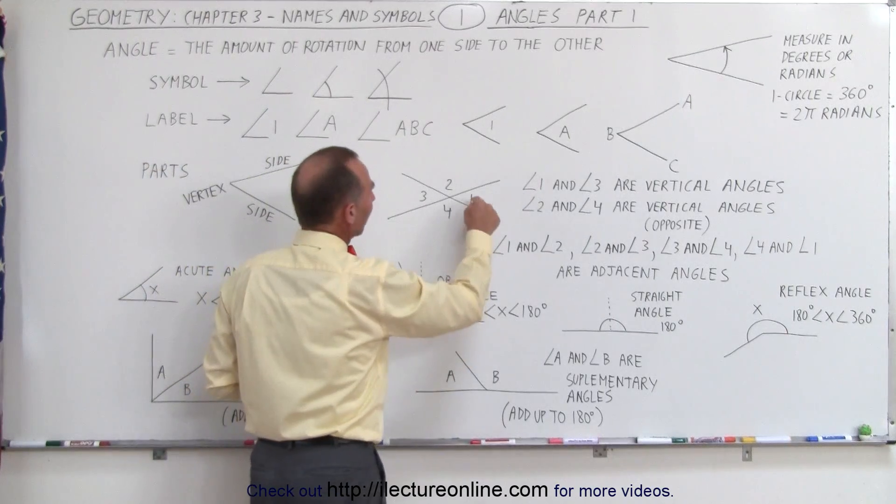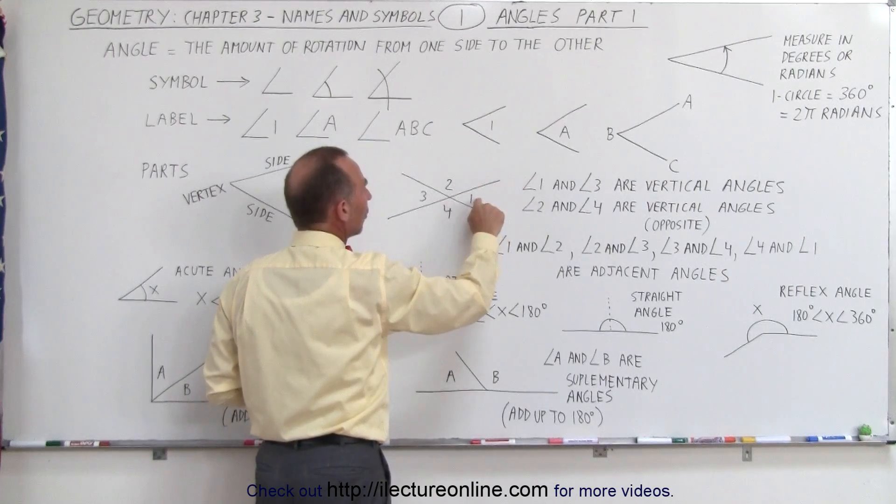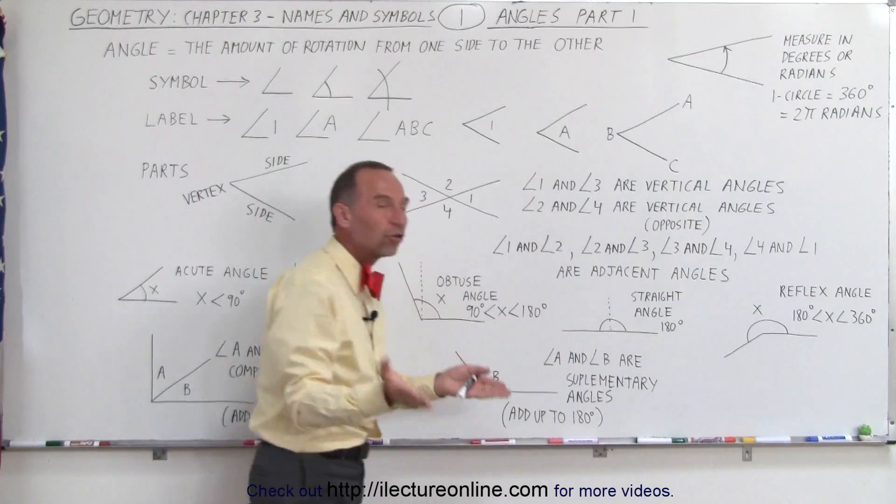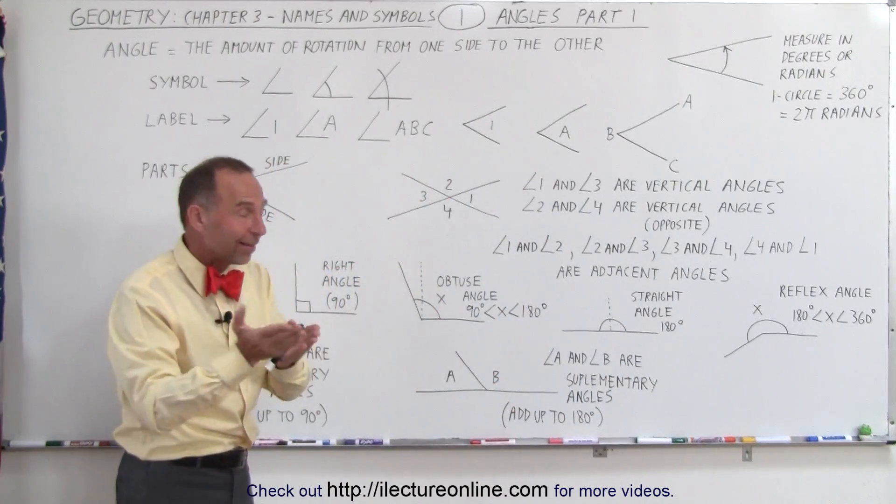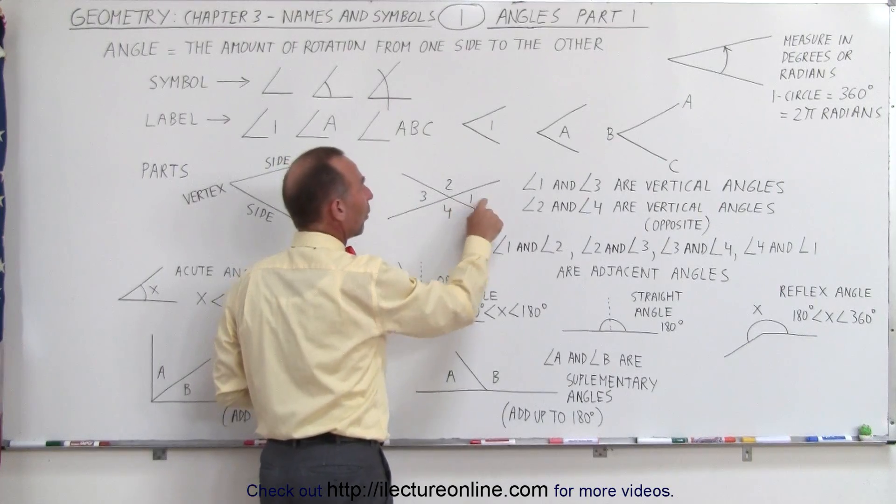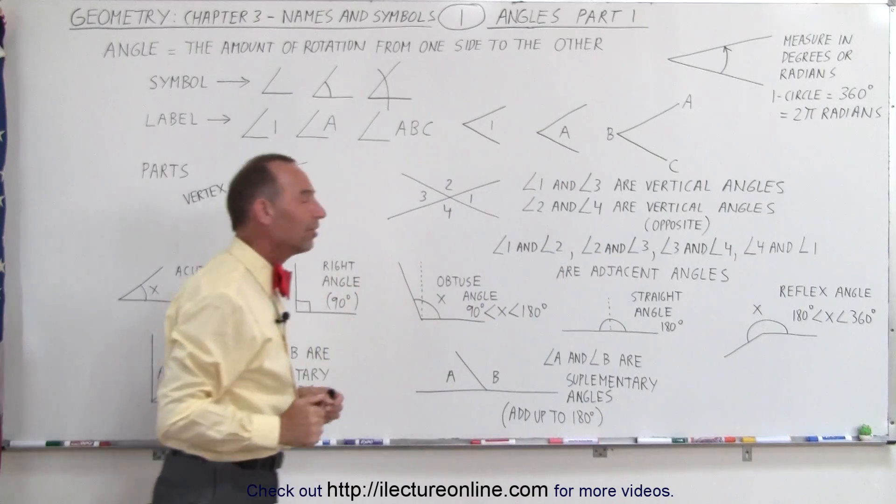Then also notice that we have angles that are side by side. They share a common side. So angles 1 and 2 are called adjacent angles. They are adjacent to one another, which means side by side. So are angles 2 and 3, 3 and 4, and 4 and 1. So these four pairs of angles are called adjacent angles.